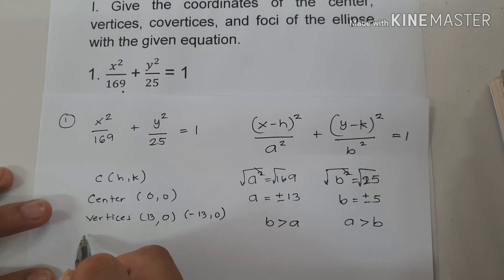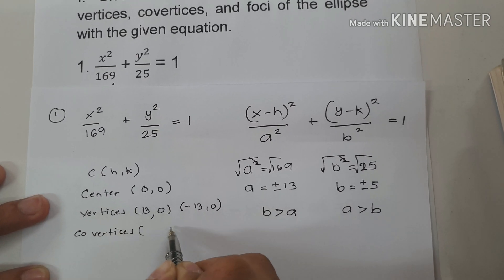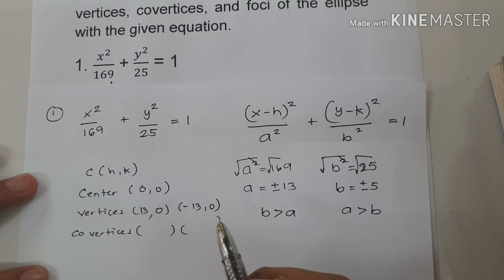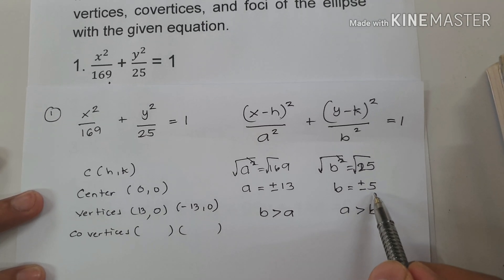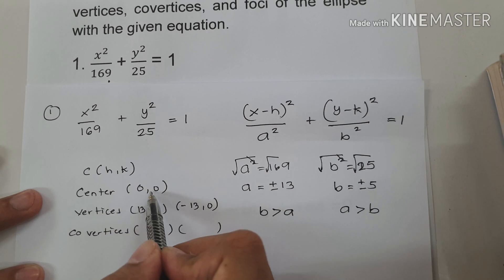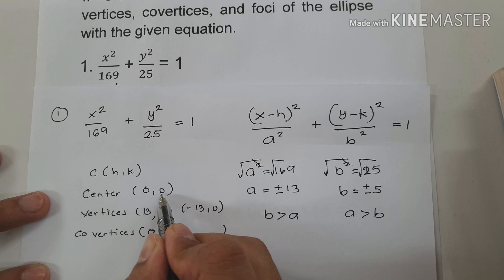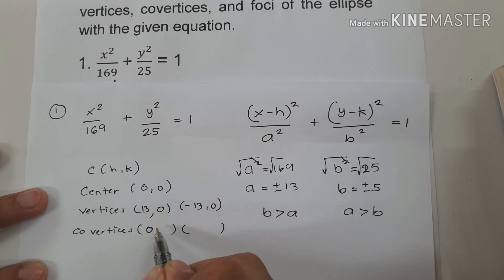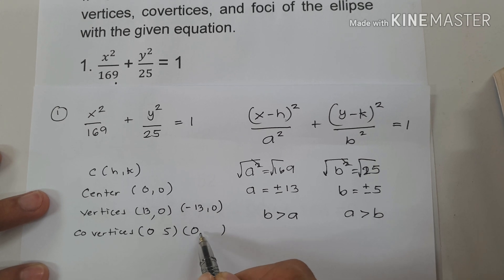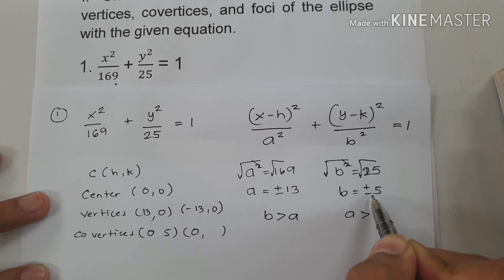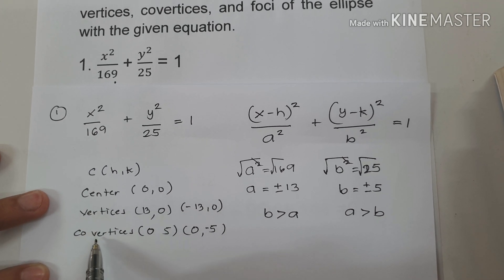Now let's determine the co-vertices. Since our ellipse is horizontally oriented, we add the value of b to the value of k, which is 0, and write the value of h. So the value of h is 0, and k is 0 plus 5, giving us (0, 5). On the other side we have (0, negative 5). So we have found the center, vertices, and co-vertices.